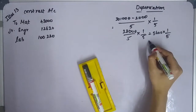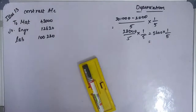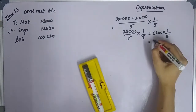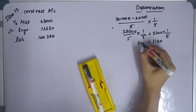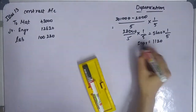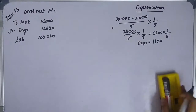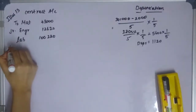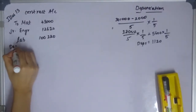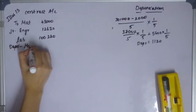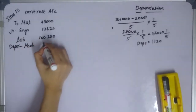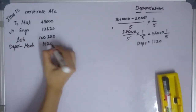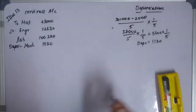So 28,000 divided by 5 gives 5,600, and 5,600 multiplied by one-fifth gives 1,120. So the depreciation value for the machine is 1,120.